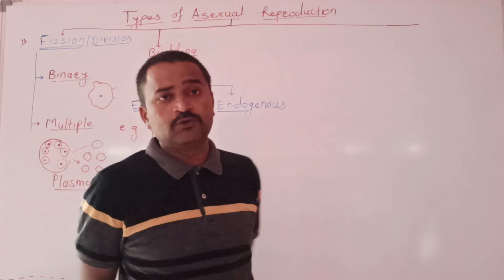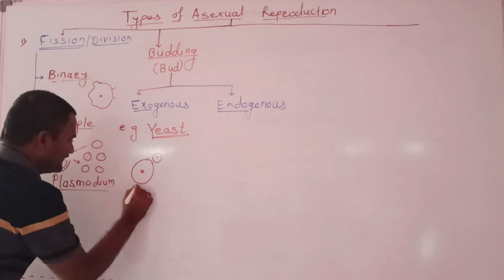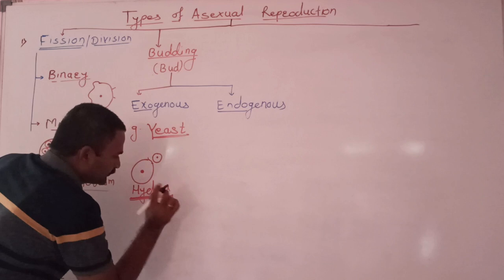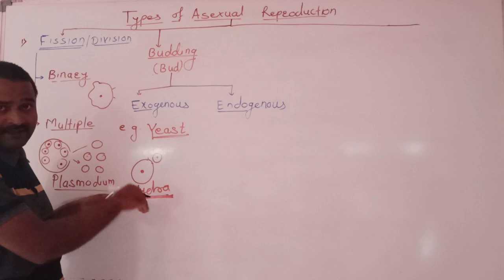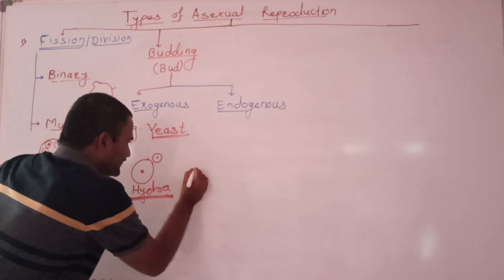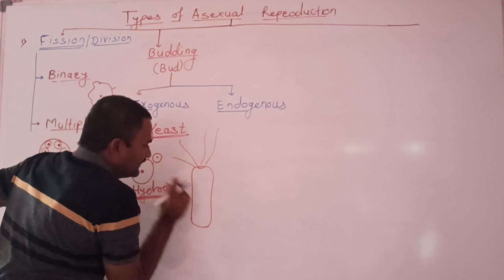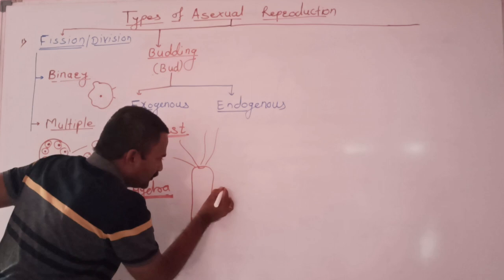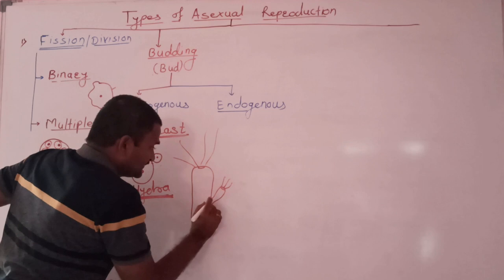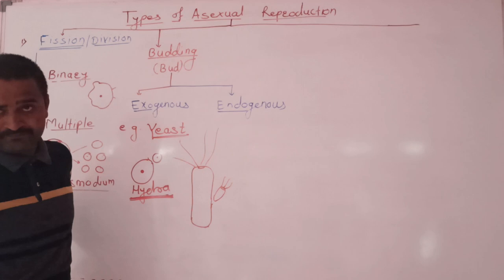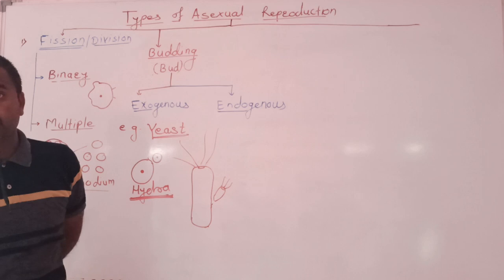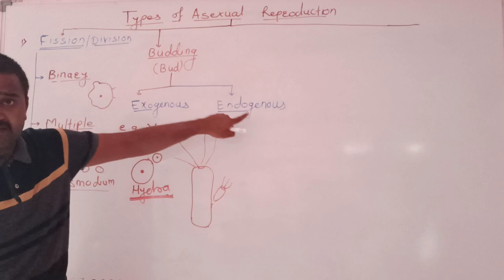Then one more organism reproduces by exogenous budding, and this organism is hydra. Hydra is an animal belongs to phylum cnidaria. In hydra, suppose this is the body of parent hydra. This is the mouth, covered by tentacles. Then on the surface of the hydra, a tiny outgrowth or bud develops. After growth, this bud detaches from the hydra to form a new hydra. The bud develops outside, that's why it is called exogenous budding.